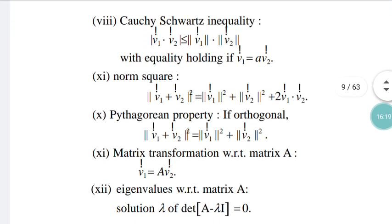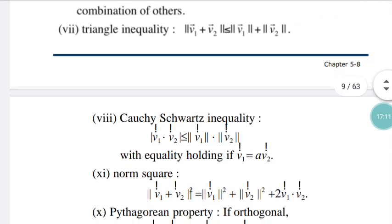Now, the norm square: |V1 + V2|² can be written as |V1|² + |V2|² + 2(V1·V2), similar to the (A+B)² form. The Pythagorean property means that if V1² + V2² equals |V1 + V2|², this applies when two vectors are perpendicular to each other — just as AC² = AB² + BC² in a right triangle. So for two perpendicular vectors, |V1 + V2|² = |V1|² + |V2|².